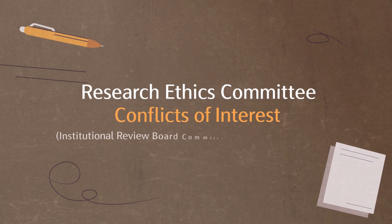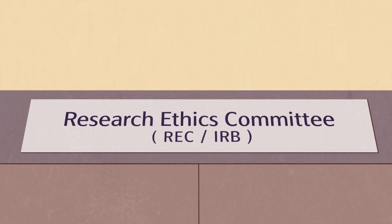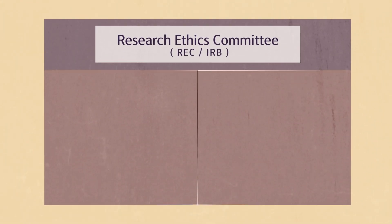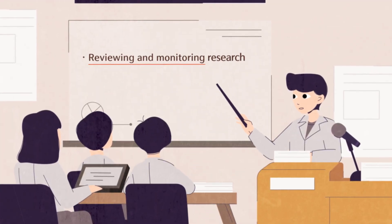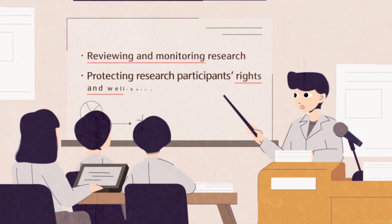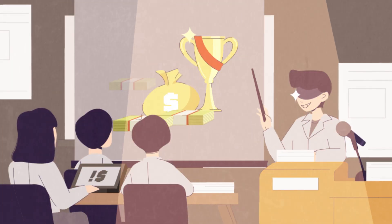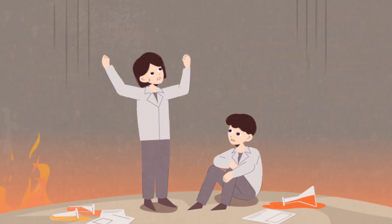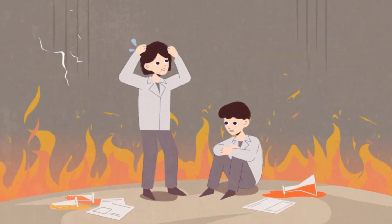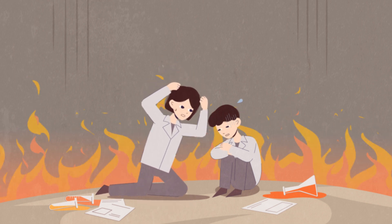Research Ethics Committee Conflicts of Interest. The Research Ethics Committee (REC) or IRB is committed to reviewing and monitoring research, as well as protecting research participants' rights and well-being. However, if a member of the committee has a conflict of interest, it may result in research participants being placed in an unsafe environment, or even harm.